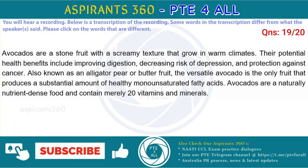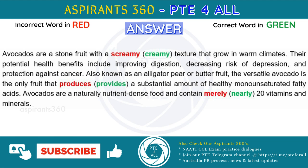Avocados are a stone fruit with a creamy texture that grow in warm climates. Their potential health benefits include improving digestion, decreasing risk of depression, and protection against cancer. Also known as an alligator pear or butter fruit, the versatile avocado is the only fruit that provides a substantial amount of healthy monounsaturated fatty acids. Avocados are a naturally nutrient-dense food and contain nearly 20 vitamins and minerals.